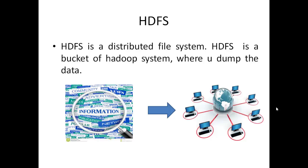Commodity systems are low-cost systems. HDFS supports large files. File size may be from gigabytes to terabytes. The next important component is MapReduce.